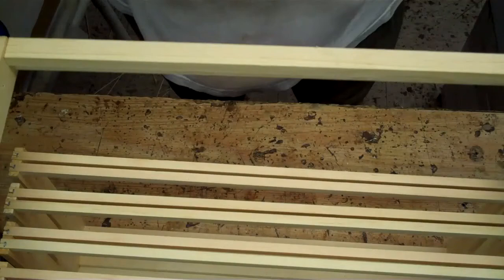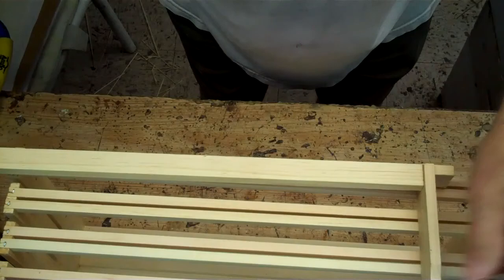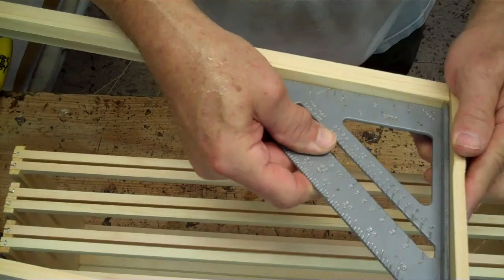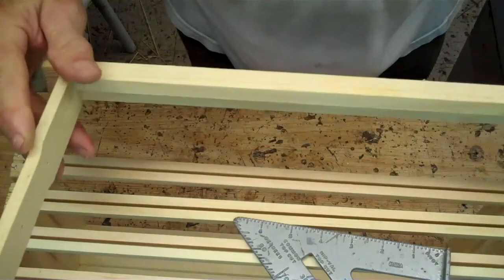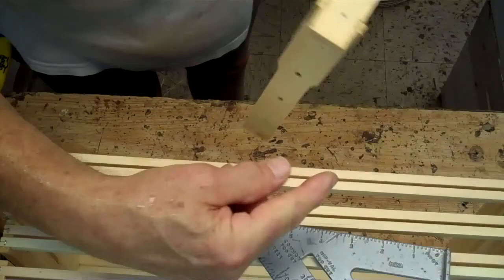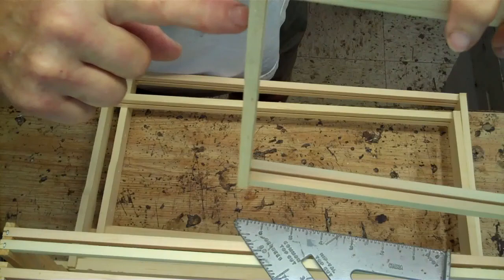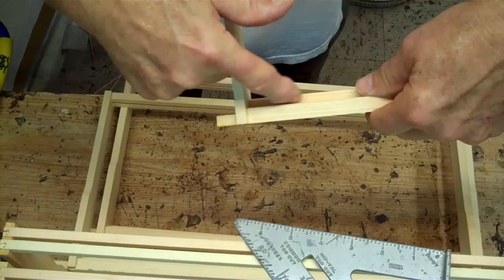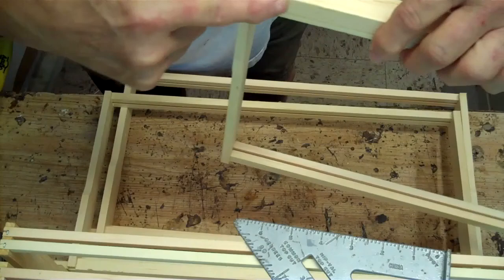I've put the frame together. Now here's a very important part. I take a square and put it to be sure the end bars are square with the top bar. This is very important. If it's not square, you can bend it a little bit. This one is square. You'll see this side is thicker than this side, because this is where the wedge came out.